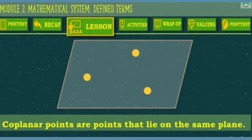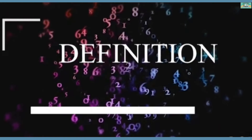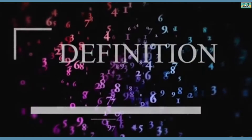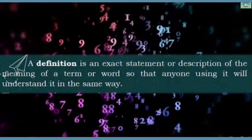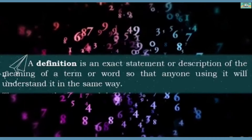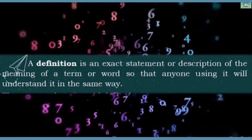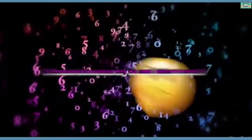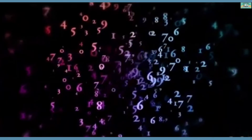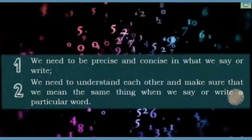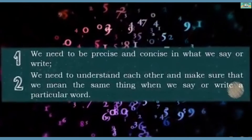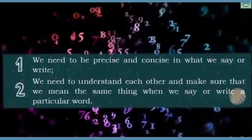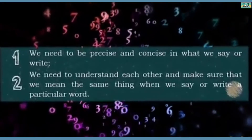Collinear points are points that lie on the same line. Definition is an exact statement or description of the meaning of a term or word, so that anyone using it will understand it in the same way. What are the reasons why we need to define terms? First, we need to be precise and concise in what we say or write. We also need to understand each other and make sure we mean the same thing when we say or write a particular word.